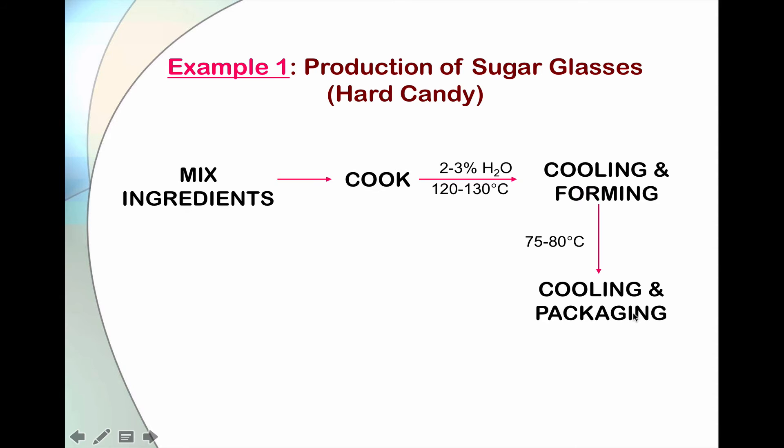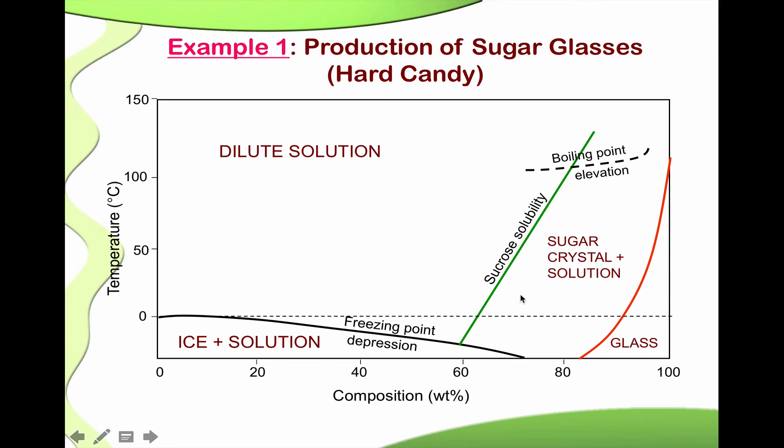So now, let's look at the path of this process on the state diagram. Okay, this is how it looks like, how we can illustrate the process that happened during the production of hard candy. Okay, let's say we start at point 1 here. This is the point where we have mixed the sugars in the mixture.